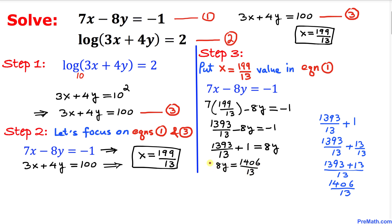Let's isolate y by multiplying both sides by one-eighth. This 8 and 8 is gone. So y turns out to be, if we simplify, 703 divided by 52. This is our y value.